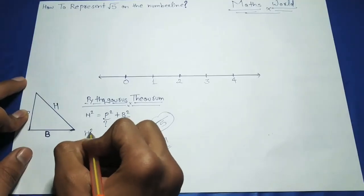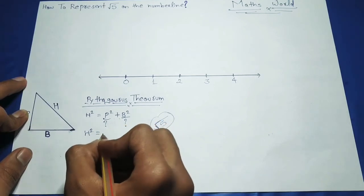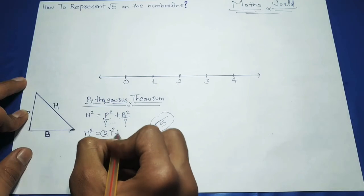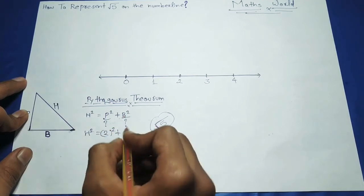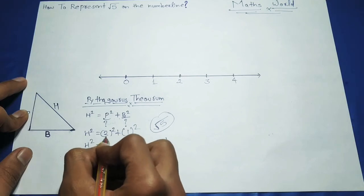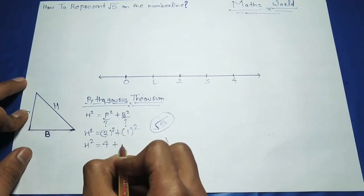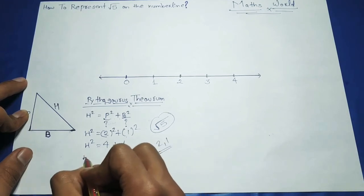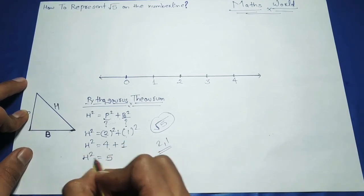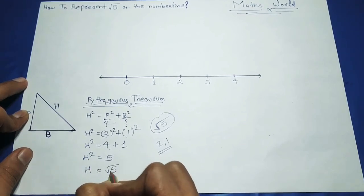If we do H square equals, we add P value 2, so 2 square, plus B value 1, so 1 square. Then H square equals 2 square 4 plus 1 square 1. Then H square equals 4 plus 1, which is 5. Then H equals square root 5.